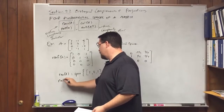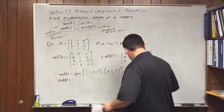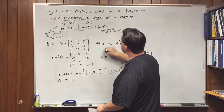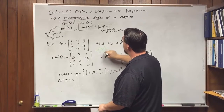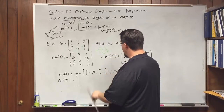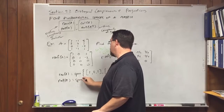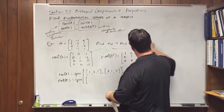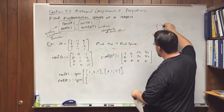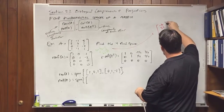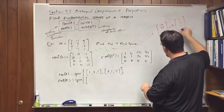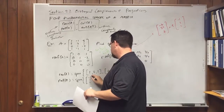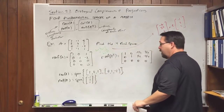The null space of A is found in the usual way. Let x3 equal t, then x1 equals negative t, x2 equals 2t. So you get the vector (-t, 2t, t), and factoring out t gives (-1, 2, 1). The basis for the null space of A is {(-1, 2, 1)}.